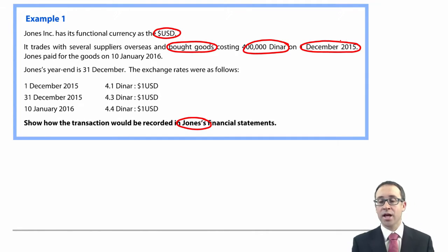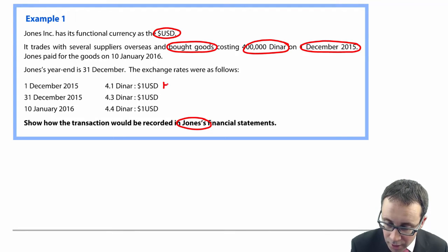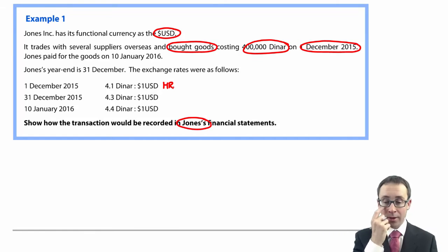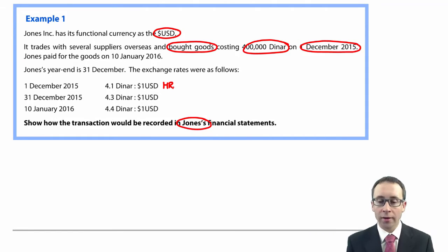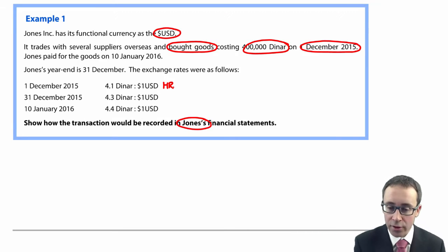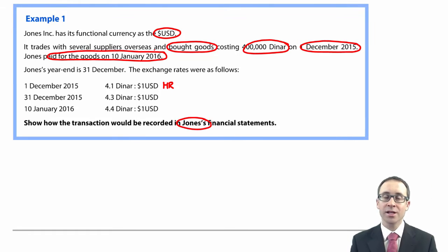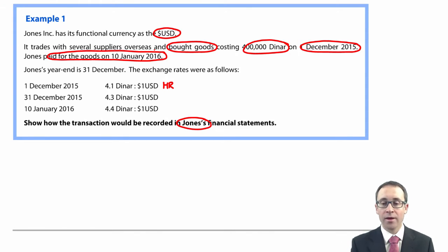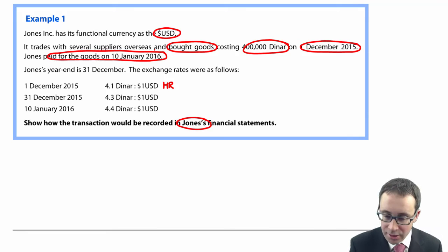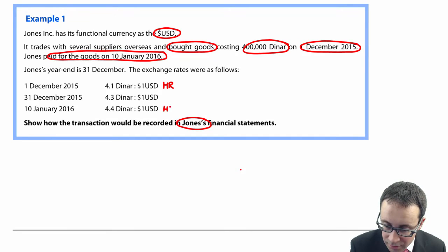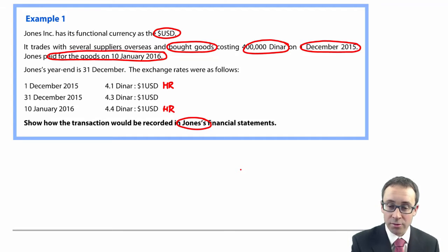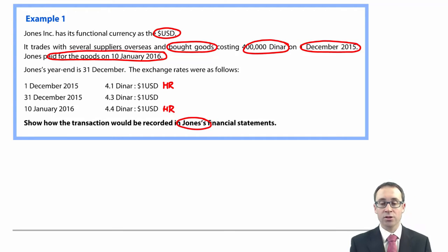We need to find out the exchange rate on the 1st of December 2015. The historic rate at that date is 4.1 dinar to the dollar. Jones paid for the goods on the 10th of January 2016, so this is clearly a credit purchase. When we pay, we use the rate on that date — the 10th of January 2016 — which is also referred to as the historic rate, being 4.4 dinar to the dollar.